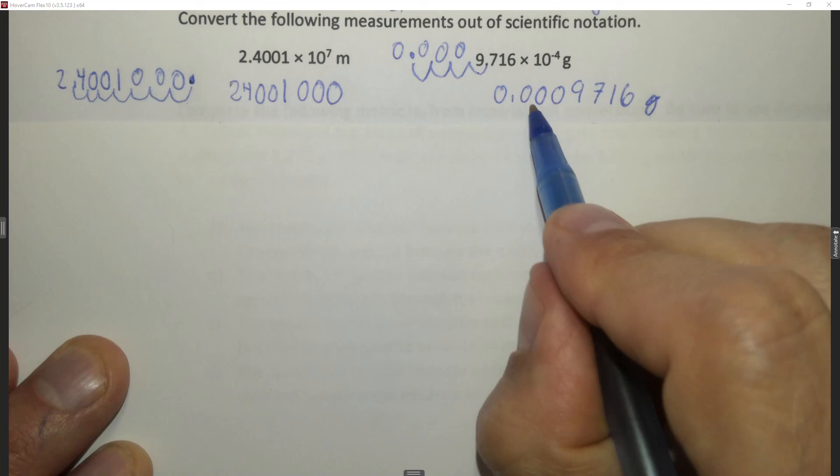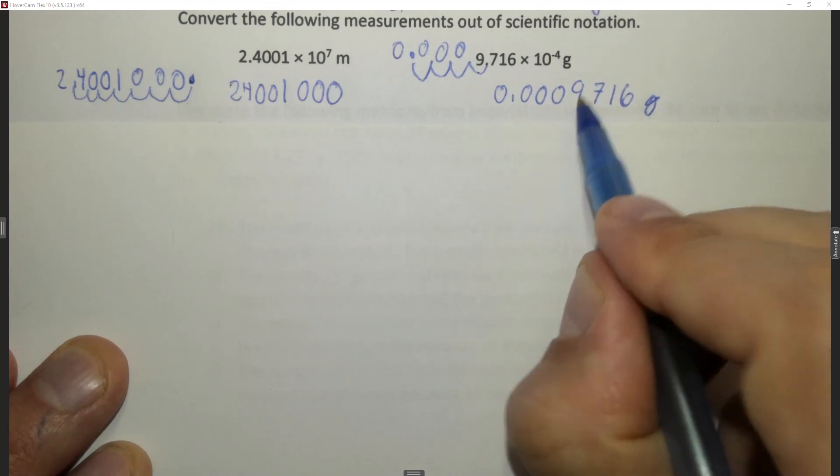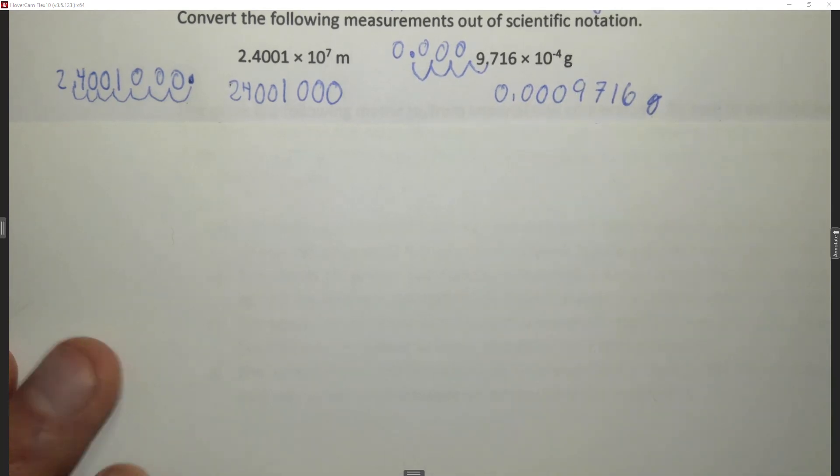If you want to check it 1, 2, 3, 4 times. So this would be times 10 to the minus 4.